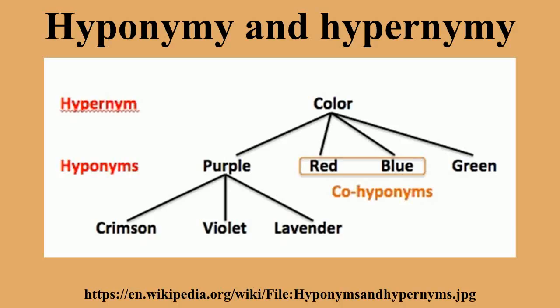Hyponyms and hypernyms. Hyponymy shows the relationship between a generic term and a specific instance of it. A hyponym is a word or phrase whose semantic field is more specific than its hypernym. The semantic field of a hypernym, also known as the superordinate, is broader than that of a hyponym. An approach to this relationship is to view a hypernym as consisting of hyponyms.